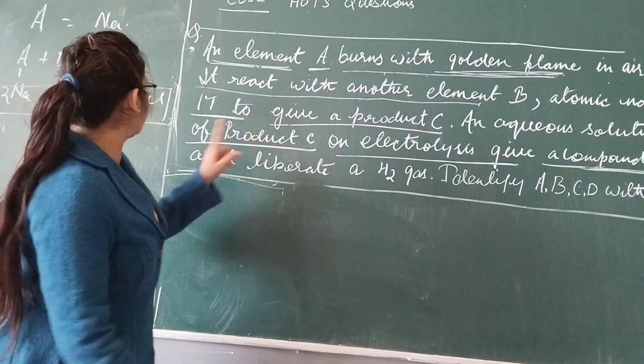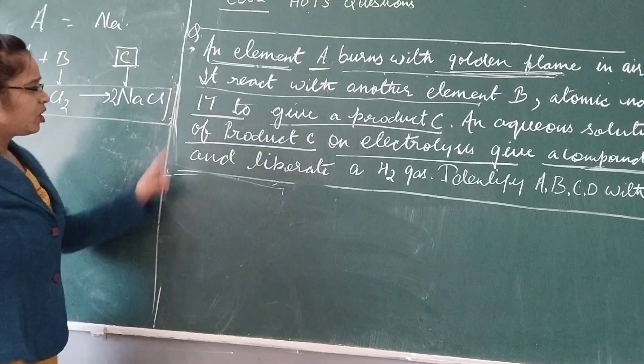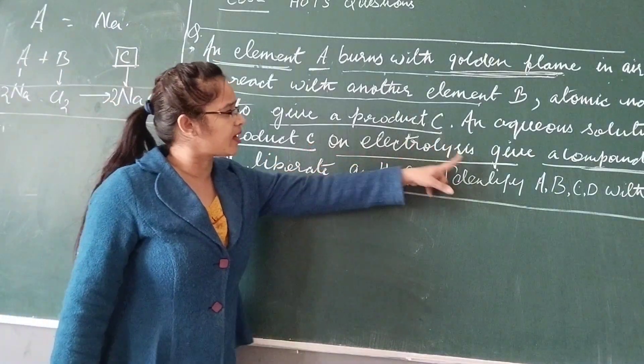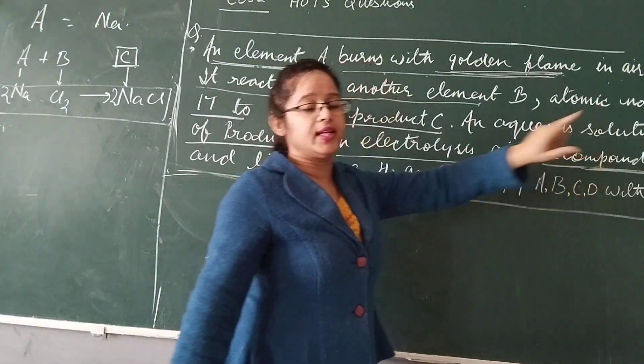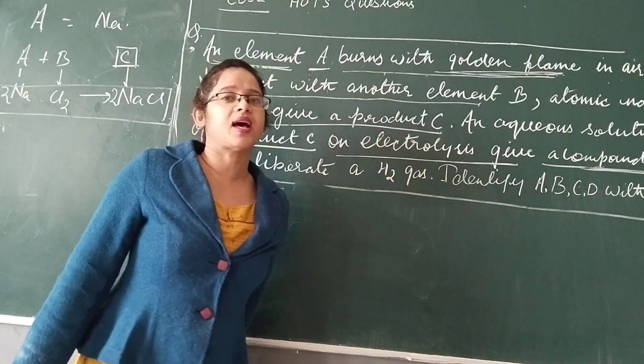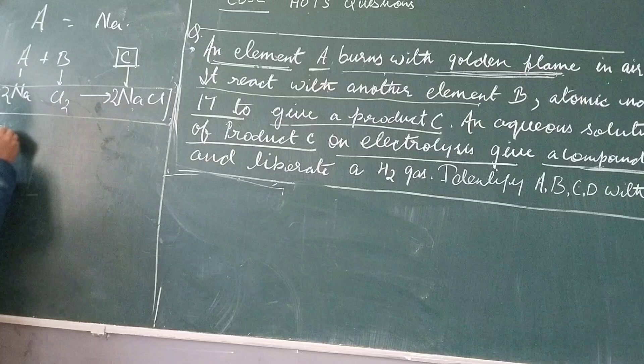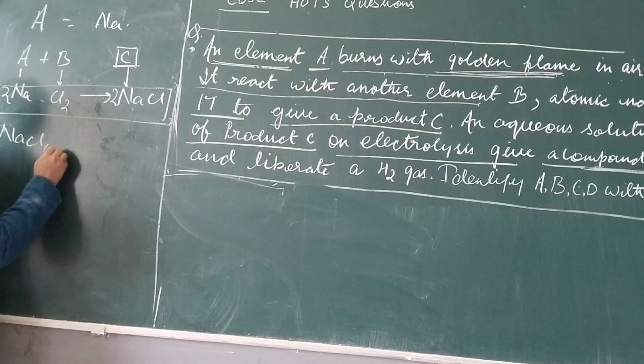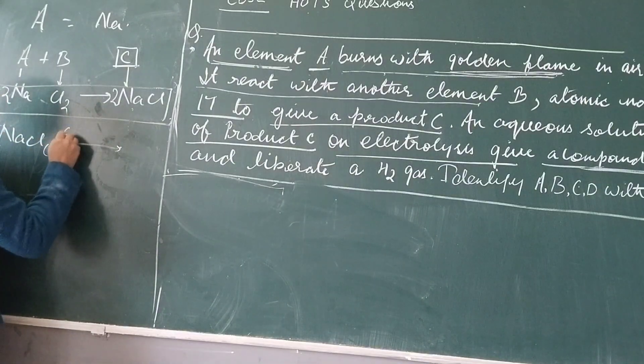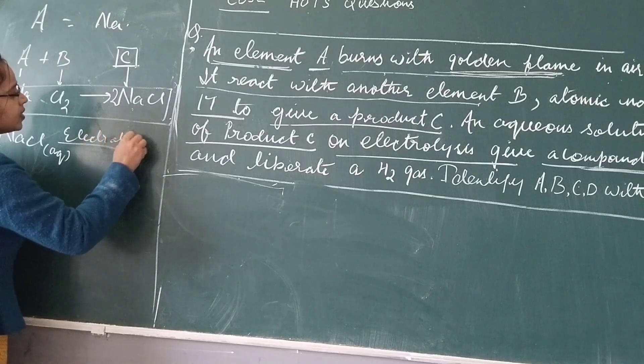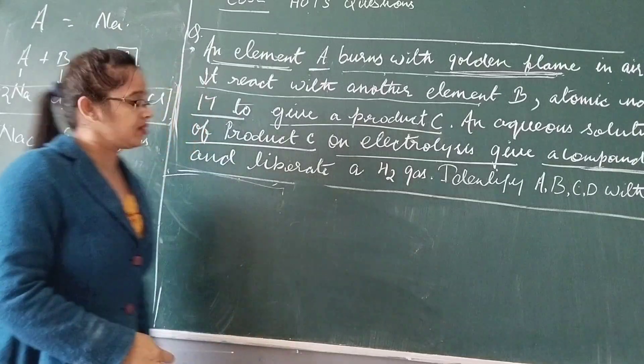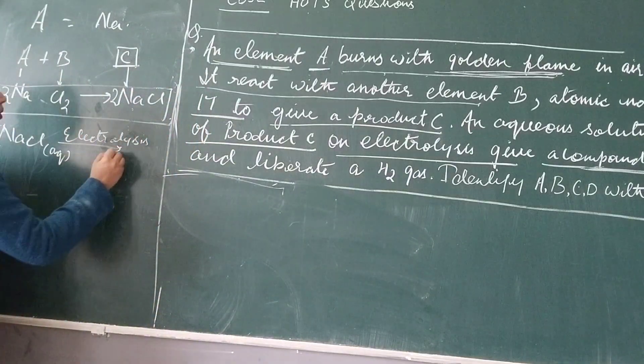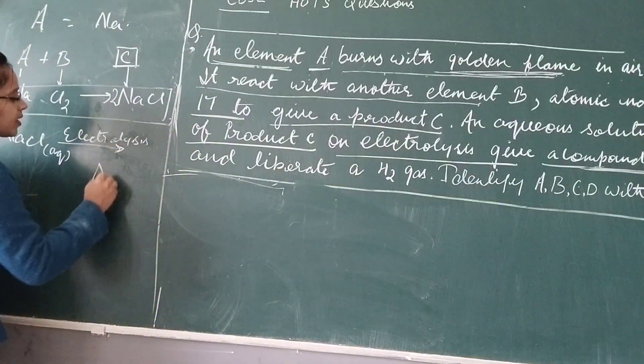Then we ask, how is our product C? Then we ask, C and electrolysis. When we do C electrolysis, we are going to produce a compound B. So what is new component B? Let's see. And this, which is aqueous. This is aqueous. Electrolysis. Electrolysis is aqueous solution. When we pass the equation, it is aqueous solution.